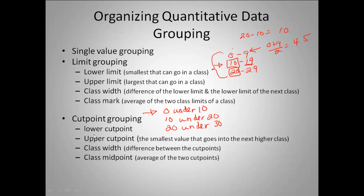We have the same types of things. Our lower cut point is the smallest that can go into a class, and the upper cut point is the smallest value that goes into the next higher class. So our upper cut point would be 10. The class width, same thing happens, we take the difference of these two. And then our class midpoint is the average of the two cut points.